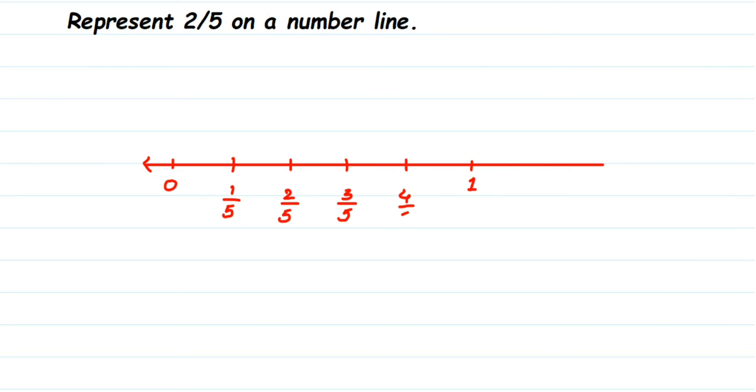And the next will be 5 by 5, but 5 by 5 is nothing but 1. When you divide 5 and 5 you will get the answer 1. And here we have to locate 2 by 5, which is here. That's it. So it's very simple, you have to just locate the denominator and make that many equal parts between the two numbers.